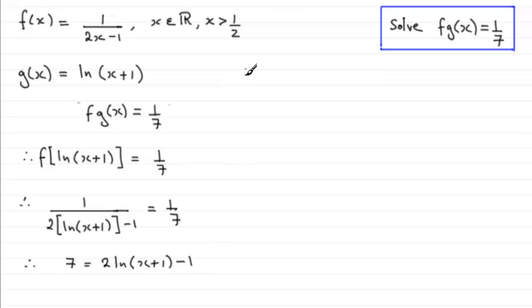And if we come down here, what we can do now is add 1 to both sides, and so we have 2 times the natural log of x plus 1 equals 7 plus 1, which is 8. Divide both sides by 2 now, and we've got the natural log of x plus 1 equals 4.